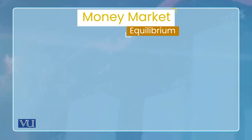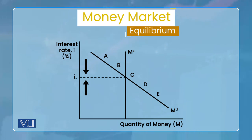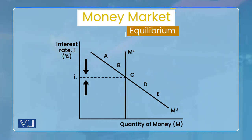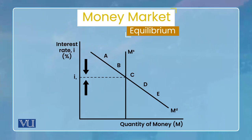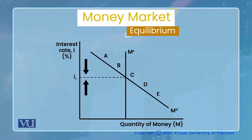Money demand और money supply को मिलाने पर money market equilibrium बनता है — Point C, जहाँ demand और supply equal हैं। यह equilibrium interest rate money market से आया है, bond market से नहीं। अगर economy Point A पे हो तो excess supply है, interest rate गिरेगा। अगर economy Point E पे हो तो excess demand है, interest rate बढ़ेगा। Ultimately stable equilibrium Point C है — यही money market से interest rate की determination है।